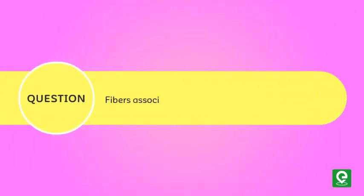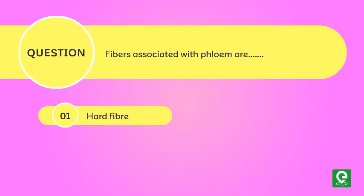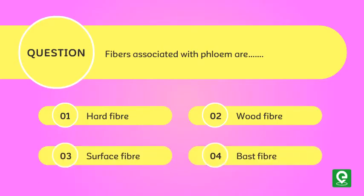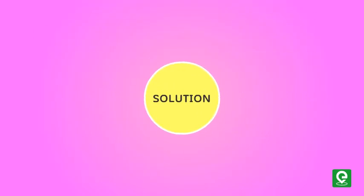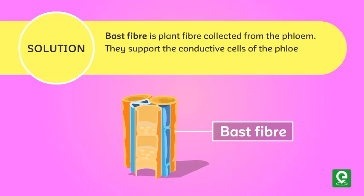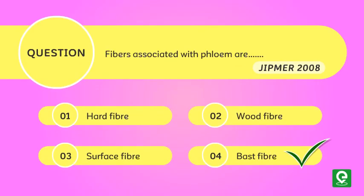Question two: Fibers associated with phloem are — (1) hard fiber, (2) wood fiber, (3) surface fiber, or (4) bast fiber? This question was asked in JIPMER 2008. Solution: Bast fiber is plant fiber collected from phloem. It supports the conductive cells of the phloem and provides strength to the stem. Hence, option four is correct.